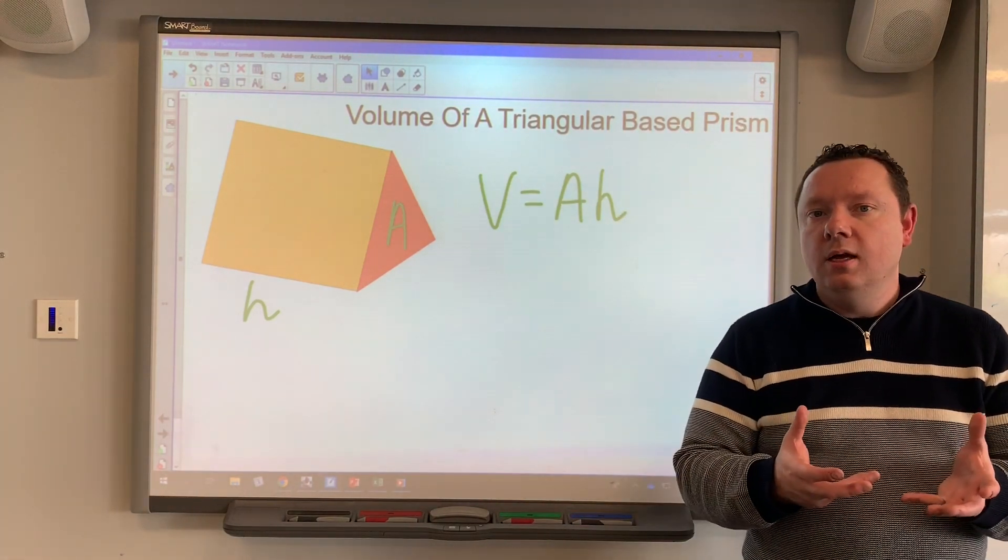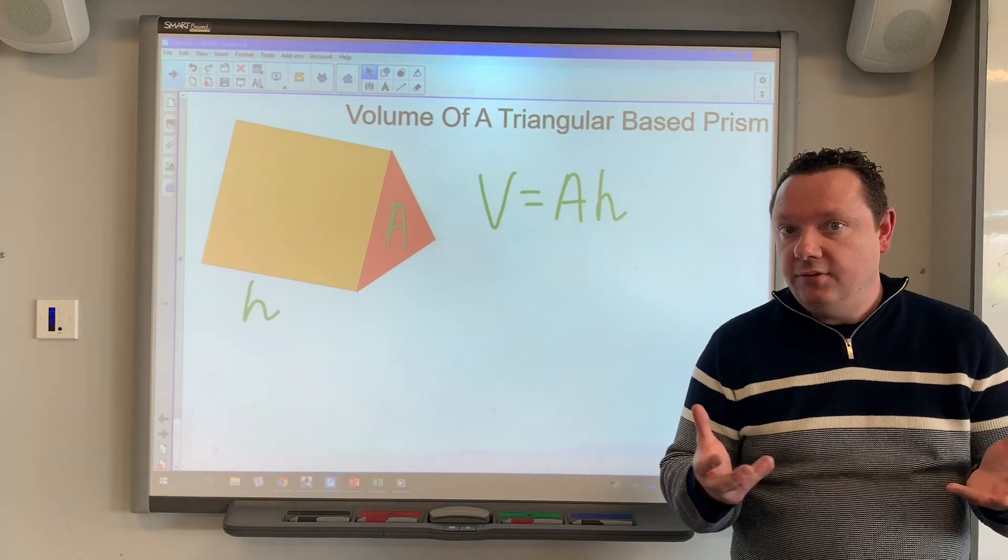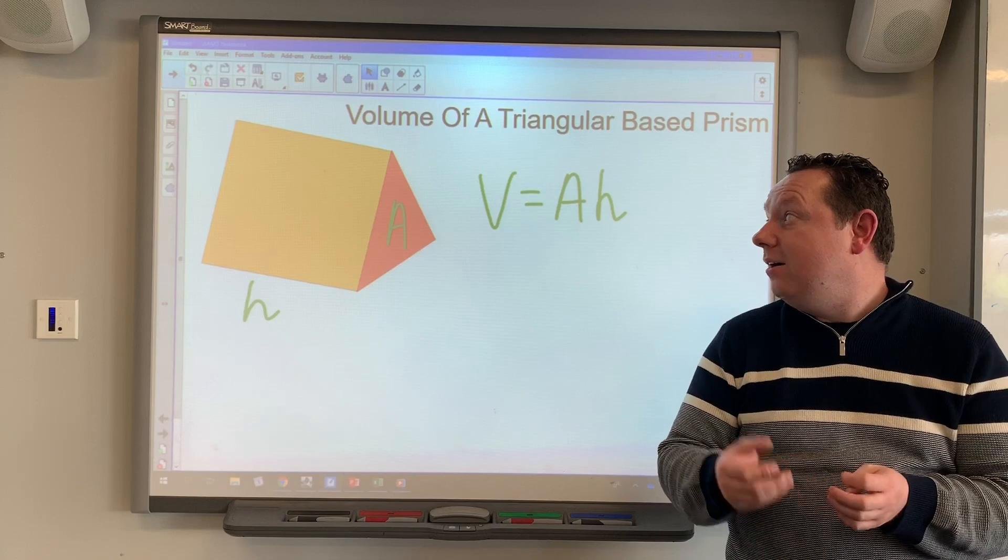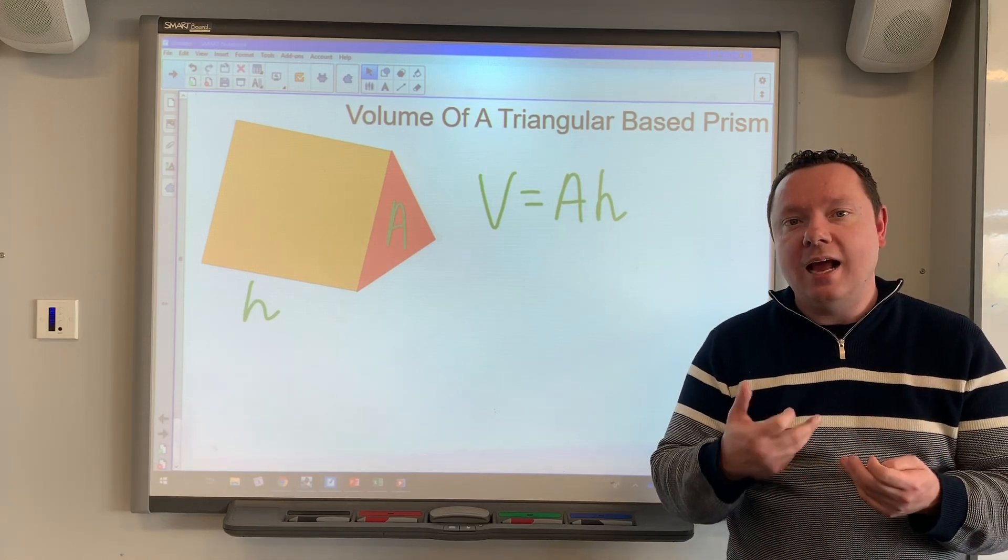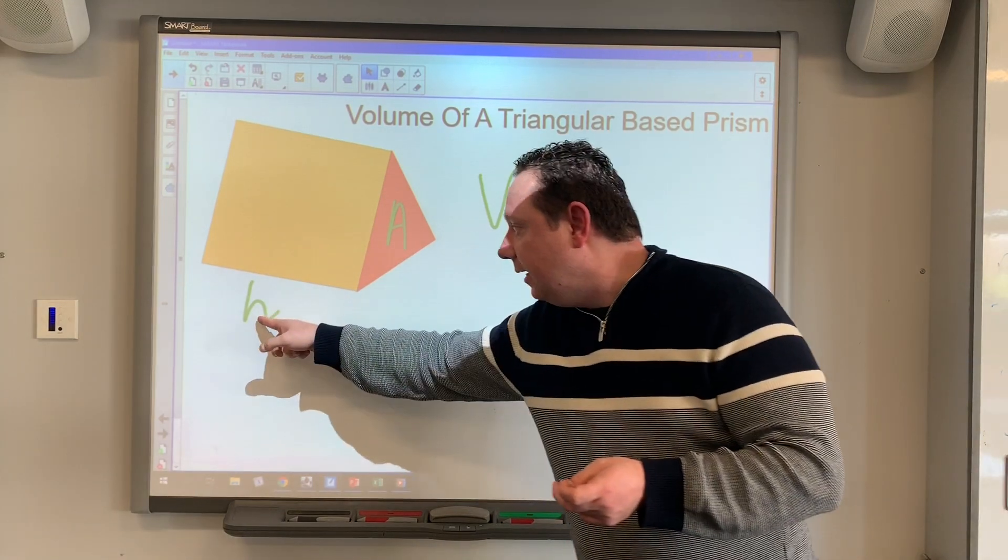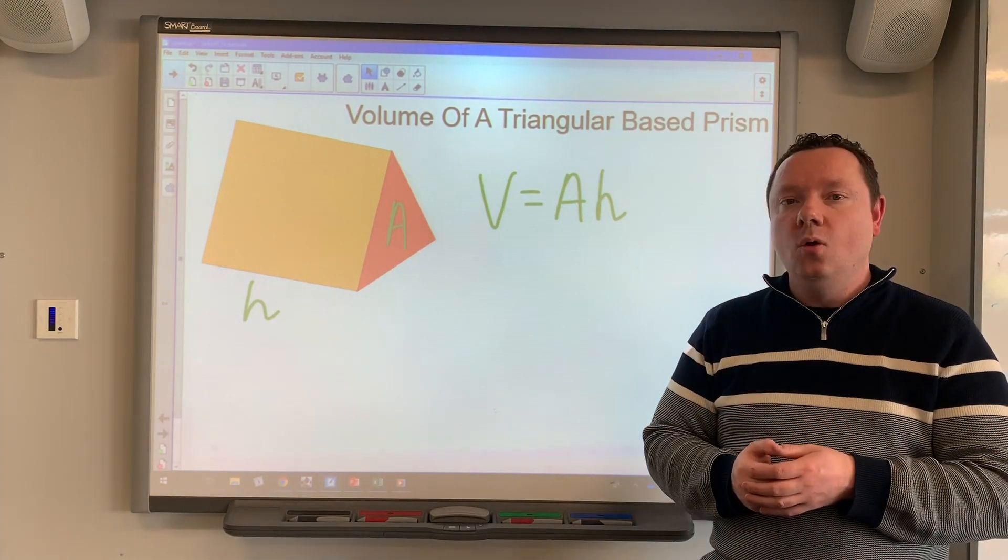Now a triangle is like half a rectangle. If you take two triangles it can make one whole rectangle. So a bit of revision here: the area of a triangle is half the base times the height. And by height I don't mean this height, I mean the height of the triangle and it's easy to see with an example.